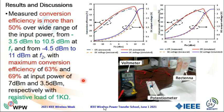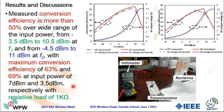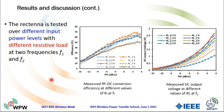Here are the results for the rectenna. Conversion efficiency versus input power at the resonance frequency is shown. The rectenna gives a maximum conversion efficiency of 69% at an input power of 3.5 dBm at a resistive load of 1 kilohm. Also shown here is the change in efficiency and DC output voltage at different values of input power at the two resonance frequencies.